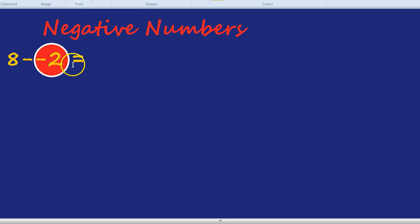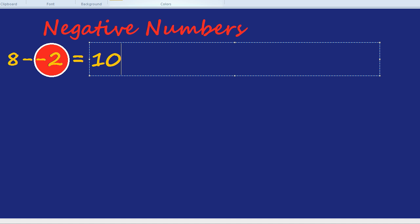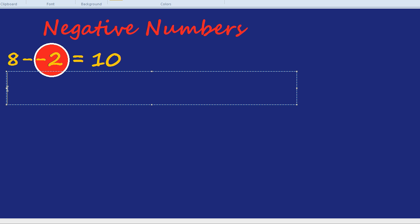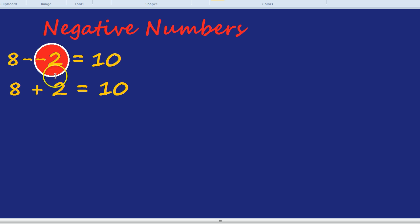So we started at 8, we're 2 pounds better off than we thought, so we're at 10. We've taken away a debt, so we're 2 pounds better off. The trick you can use is to think that the two negatives next to each other turn into a positive, so it becomes 8 plus 2. But I hope you got a kind of intuitive understanding about why it became a positive. We were taking away a debt, and getting rid of debt is always good news, so it becomes a positive.